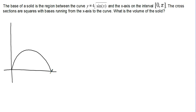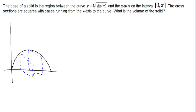Coming out of your screen towards you, we have squares. We've got cross-sectional squares coming straight out of the screen at you all along the entire length of our curve — little squares popping out of the board at you all the way along — and it's a solid figure. So the first thing we need to ask ourselves is: what is the area of one of these square cross-sections? The area of the square is just the side of the square, squared.